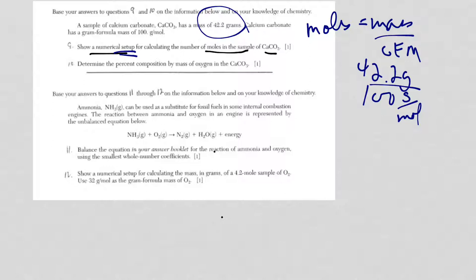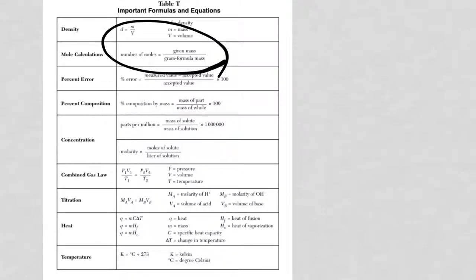Let's go to number ten. Determine the percent composition by mass of oxygen in calcium carbonate. This is another equation. Now we're using percent composition: part over the whole thing times 100.